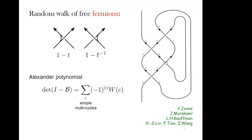You're basically a one-dimensional person walking on this diagram. You don't want to go to infinity but want to stay in this closed region. Every time you come to a crossing you follow these rules: if you're going on an underpass you just go through with no choice. If you come on an overpass - let's call it left - with probability one minus t you divert to the lower branch, and with probability t you go through. If you're coming on the right overpass, with probability t you go through and with probability one minus t inverse you divert to the lower branch.